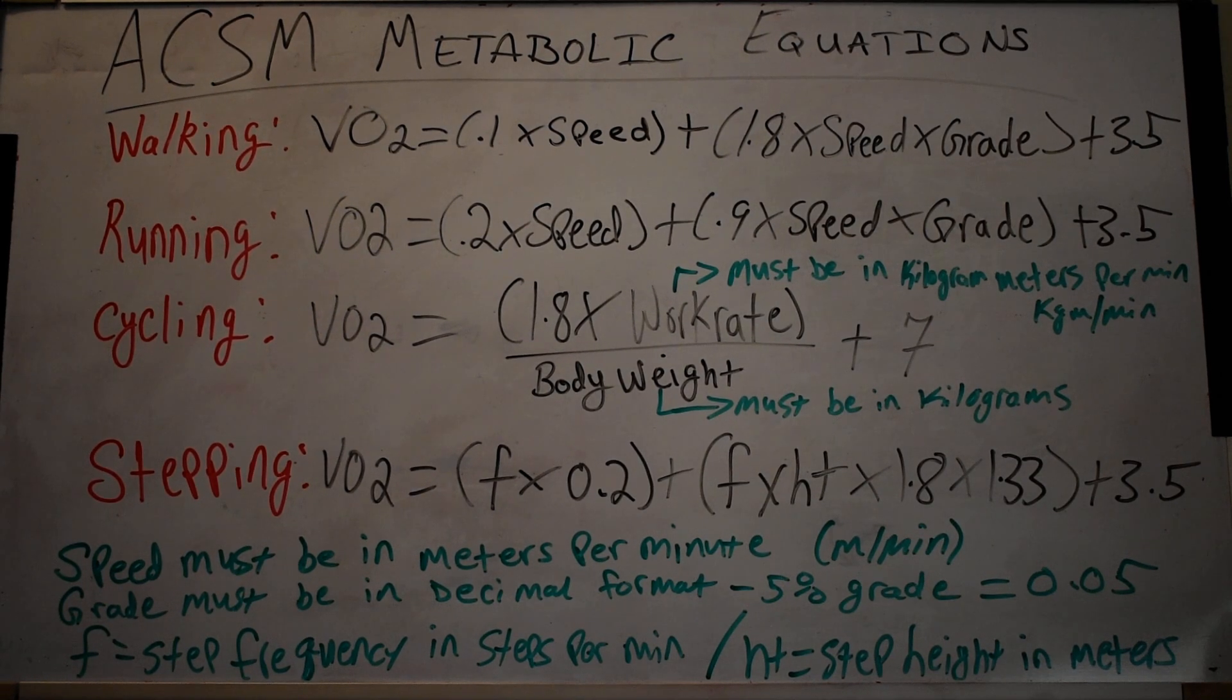Now I'm not going to do any mathematical examples in this video, but I will do them in a separate video. I will go through all the different possibilities that can be done, from the very simplest of finding a VO2 to finding what speed you would need at a certain grade, or what grade you would need at a certain speed, and for the cycling equation, what work rate you would need to be at to reach a certain VO2. I will go over all of those.